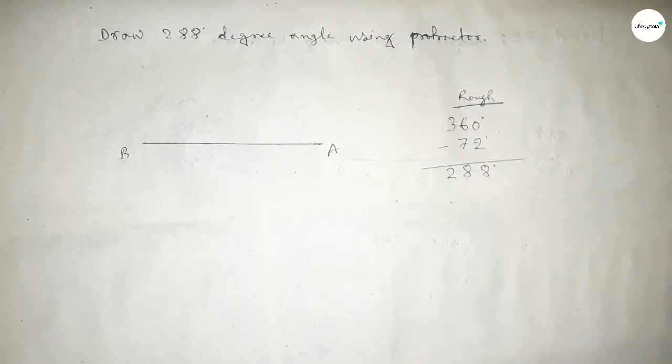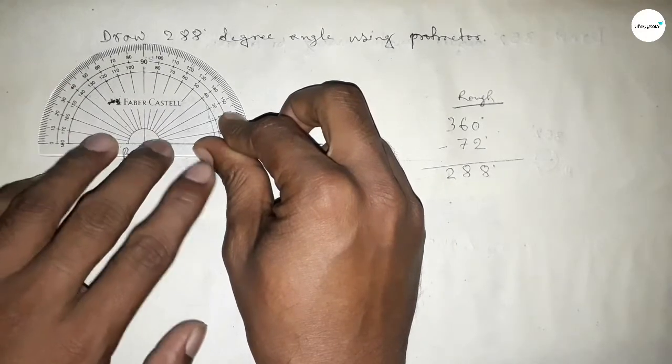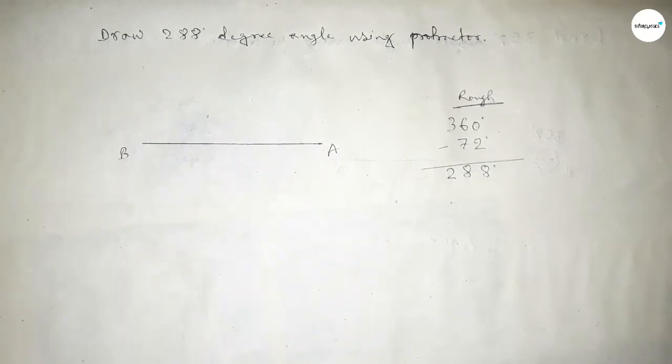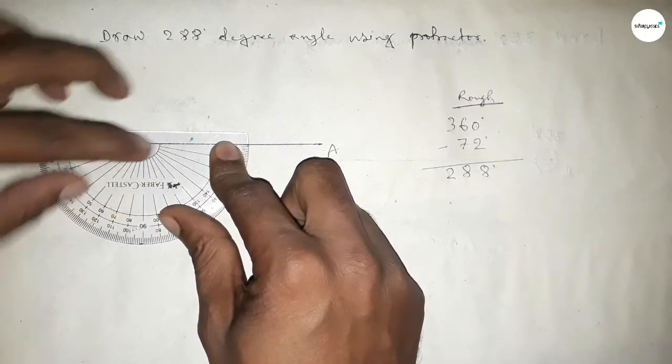First we have to draw a 360 degree angle. So putting the protractor on point B and counting the angle, so this is 180 degree angle. Plus, putting the protractor on point B by this way and counting the angle, so this is total 360 degree angle.